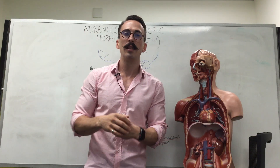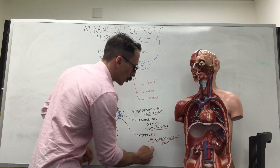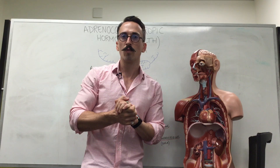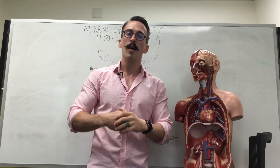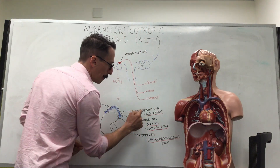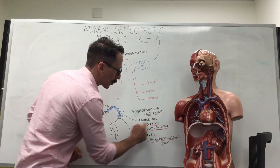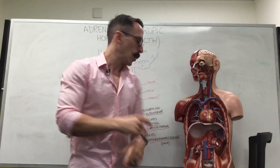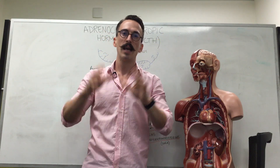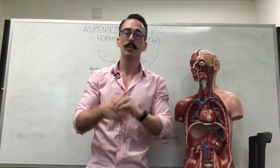Then we've got the androgens — hormones that play a role in masculinization. These include dihydroepiandrosterone, or DHEA, which plays a role in male sexual characteristics. To summarize: we've got mineralocorticoids, glucocorticoids, and androgens, and the ones most strongly stimulated by ACTH are the glucocorticoids. When their levels go up, they travel back to the pituitary gland and inhibit ACTH release — this is how negative feedback regulation works. So that's ACTH.